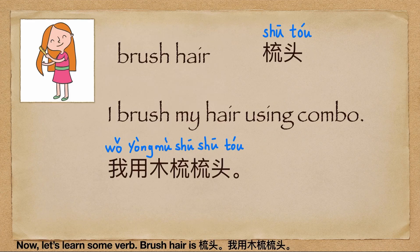Now, let's learn some words. Comb hair is 梳头 (shū tóu). 梳头，梳头，我用木梳梳头。(I use a wooden comb to comb my hair.)